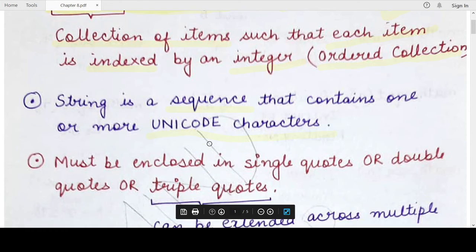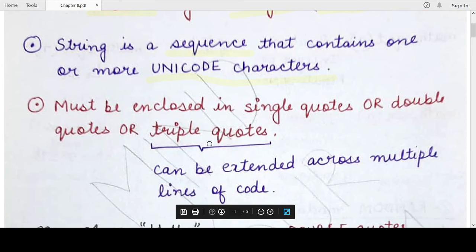While writing or specifying any string data type, you must enclose that data, that variable, or that value in either single quotes, or in double quotes, or even in triple quotes. Writing single and double quotes serves almost the same purpose.